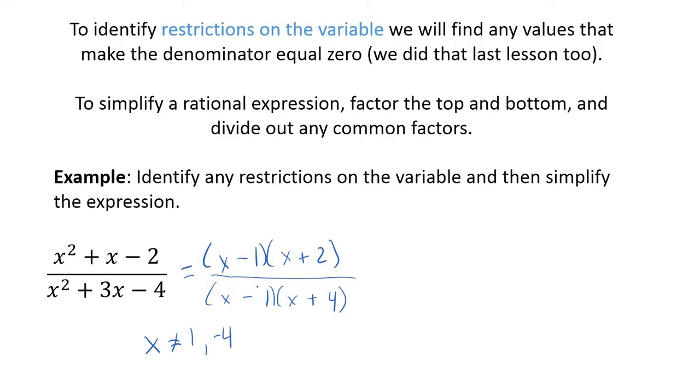Now to simplify it, notice both the top and bottom have an x minus 1 factor. Well, that divides out. x minus 1 divided by x minus 1 goes away. And so x plus 2 over x plus 4 is our simplified expression.